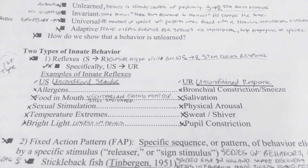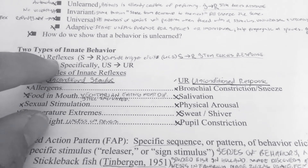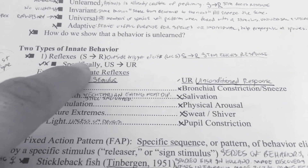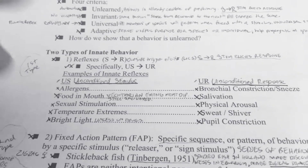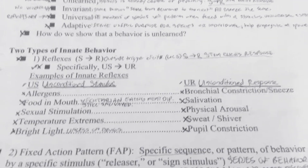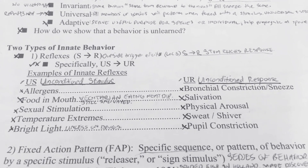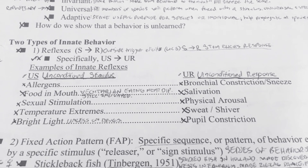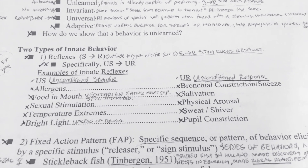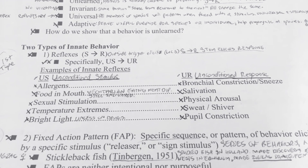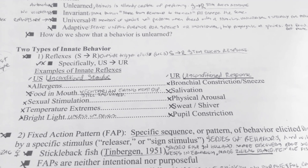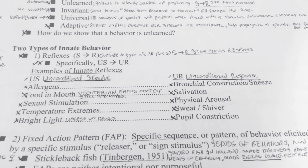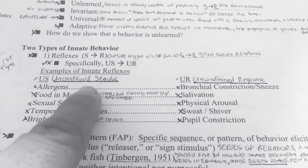First, we have reflexes. You have a stimulus — for example, a doctor hits you on the knee with a hammer, and your reflex will be for your leg to kick up. All doctors basically perform that test to check your reflexes. So you have an unconditioned stimulus and an unconditioned response.